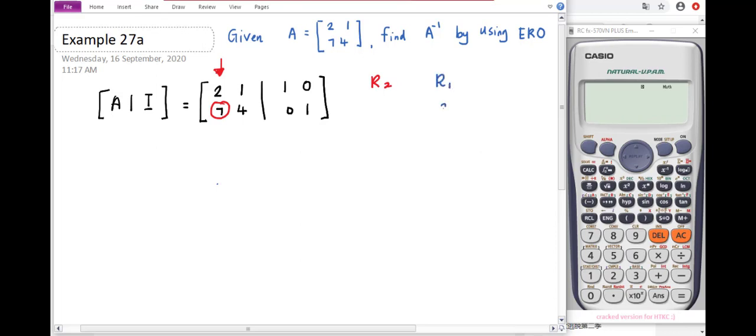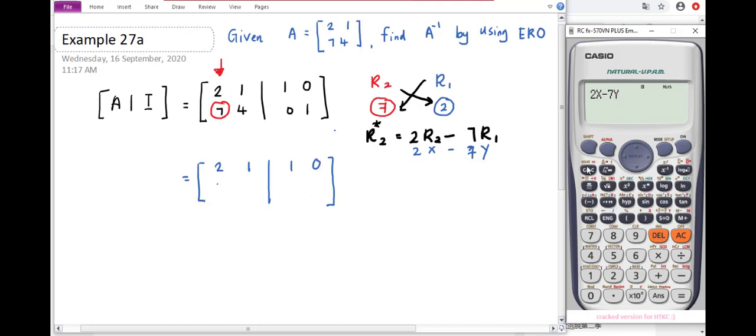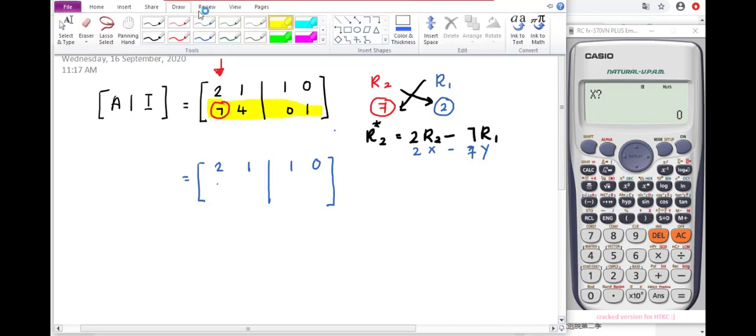Row 2 and row 1: row 2 needs to change, row 1 is helping. We write down the numbers in circle form. The new row 2 will follow the formula 2R2 - 7R1. We cross multiply to make the 7 become zero. Copy the first row because it doesn't change, and the second row with the formula 2R2 - 7R1, we label it as 2x - 7y.